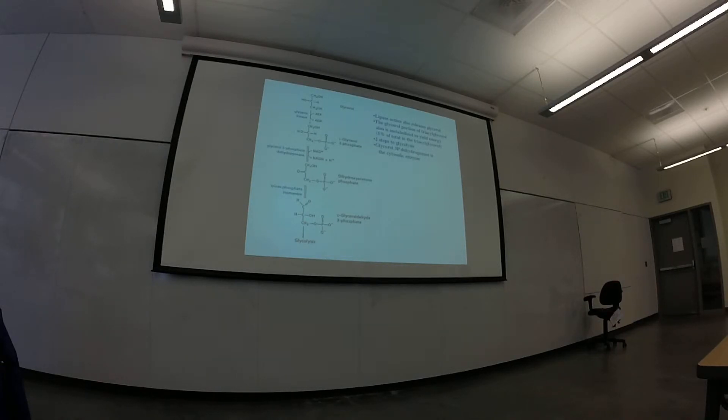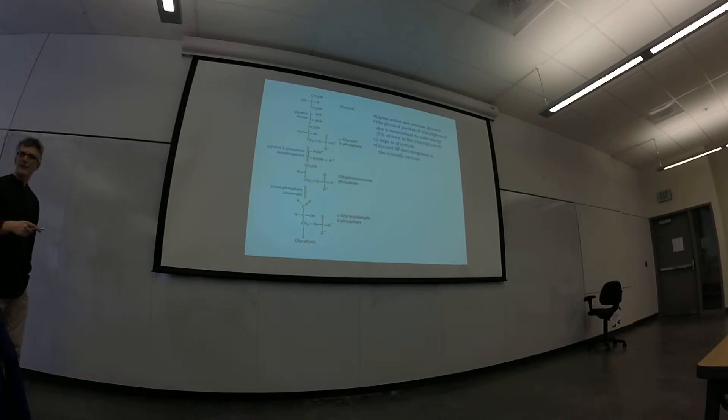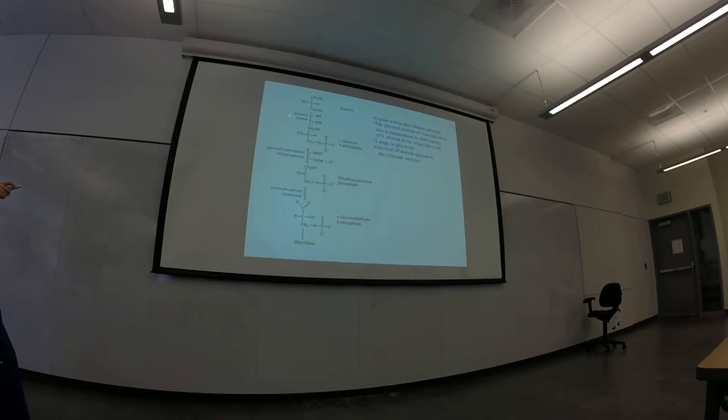The glycerol that comes off is eventually metabolized, gets transported through the bloodstream and gets into cells, and is eventually metabolized to yield energy. It's only about 5% of the total, but the body isn't wasted. So there's a couple of steps. Glycerol kinase phosphorylates glycerol, and then the dehydrogenase oxidizes it to the dihydroxyacetone phosphate. So notice we've already made an NADH. That's good for oxidative phosphorylation. And once we're at DHAP, of course, we're in glycolysis. So it's only two steps to glycolysis.